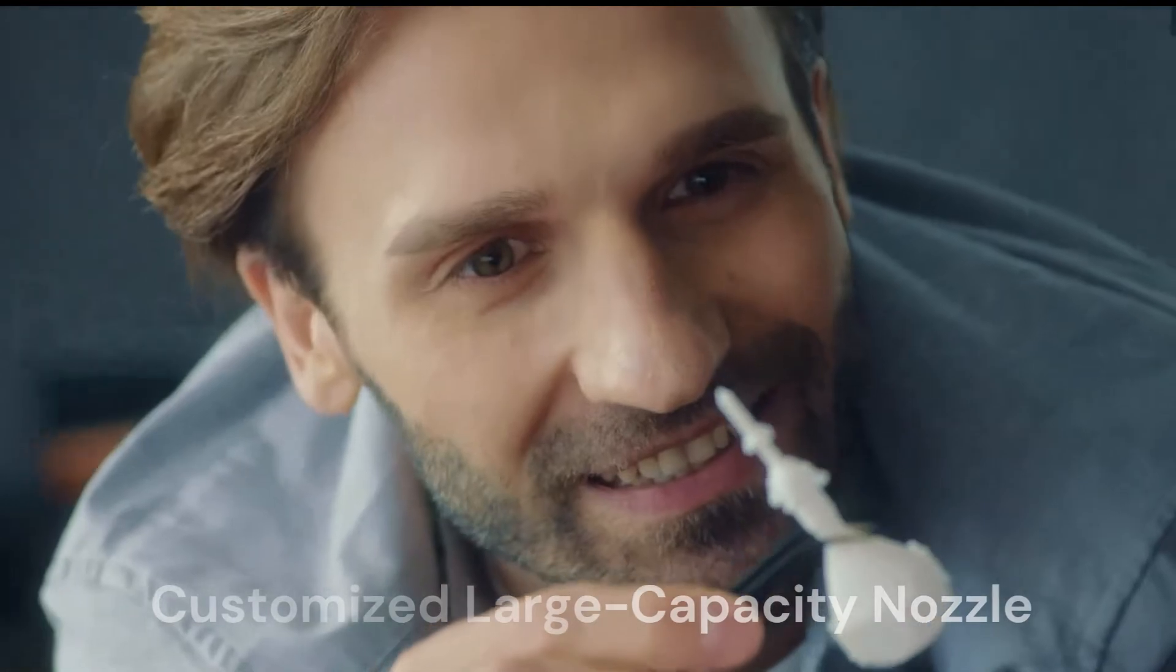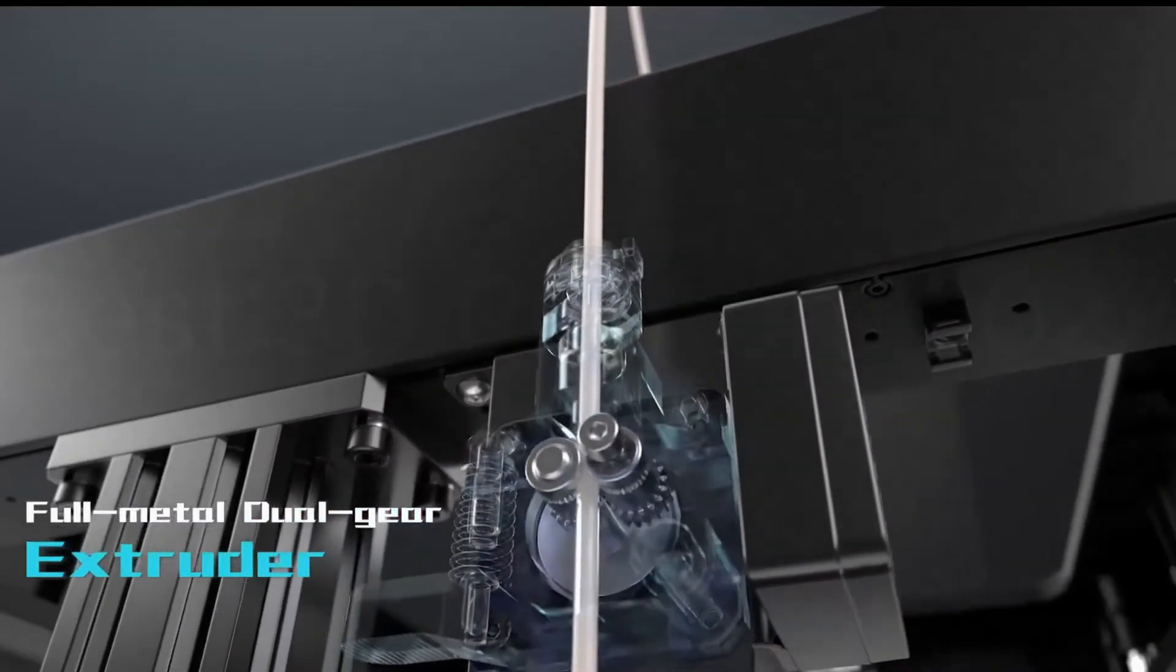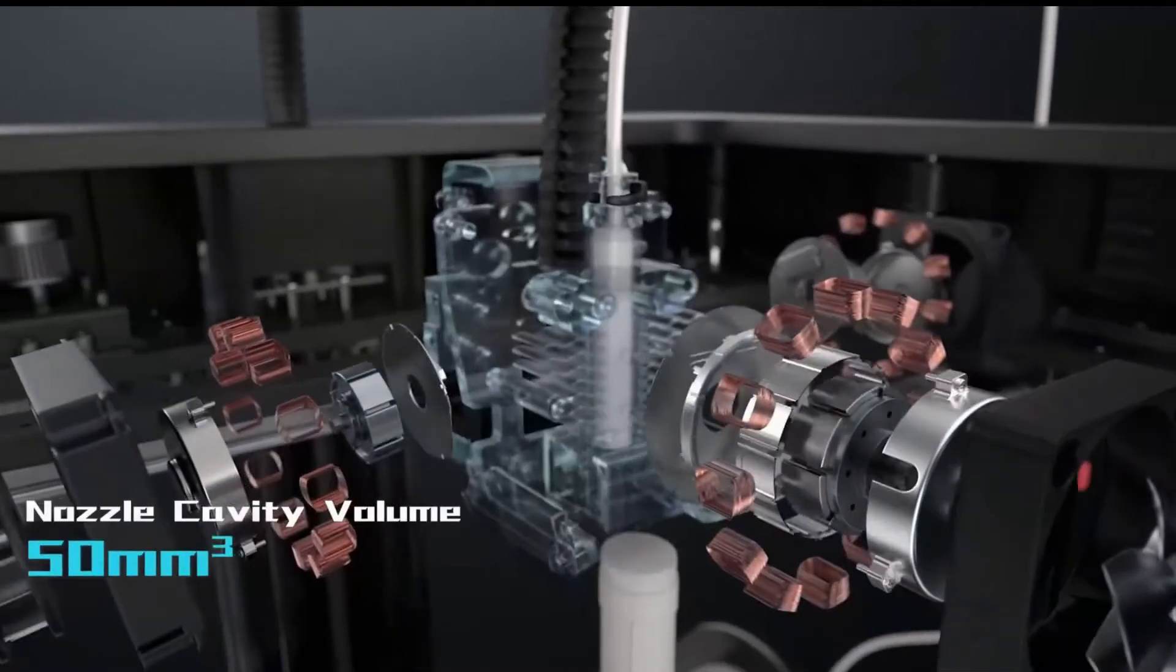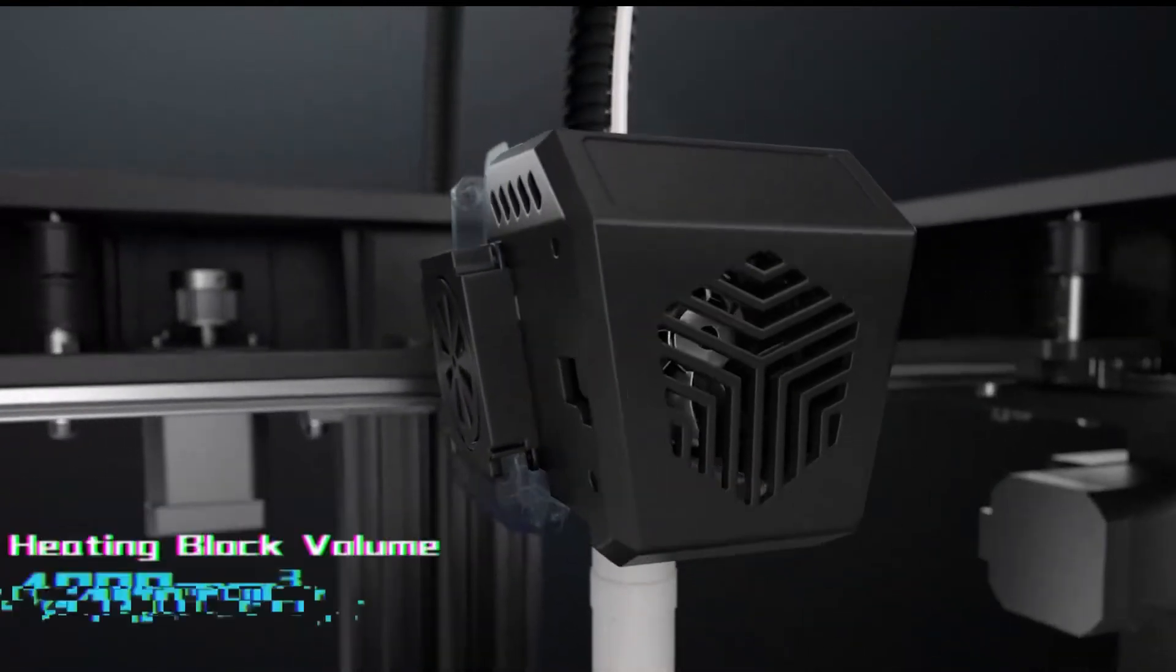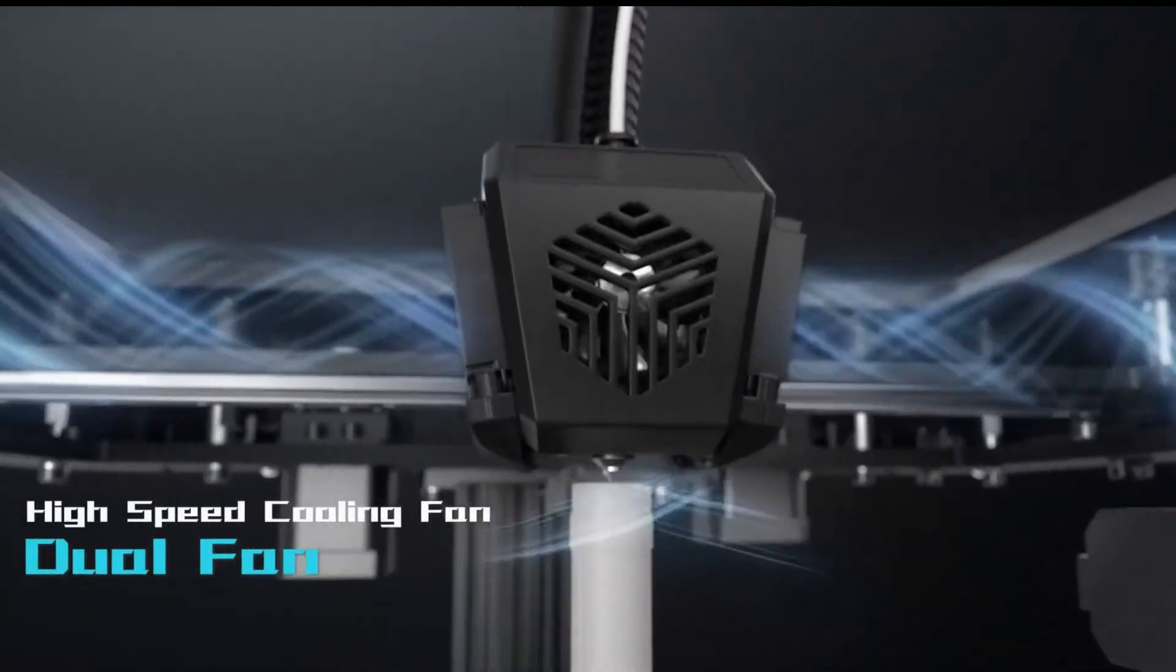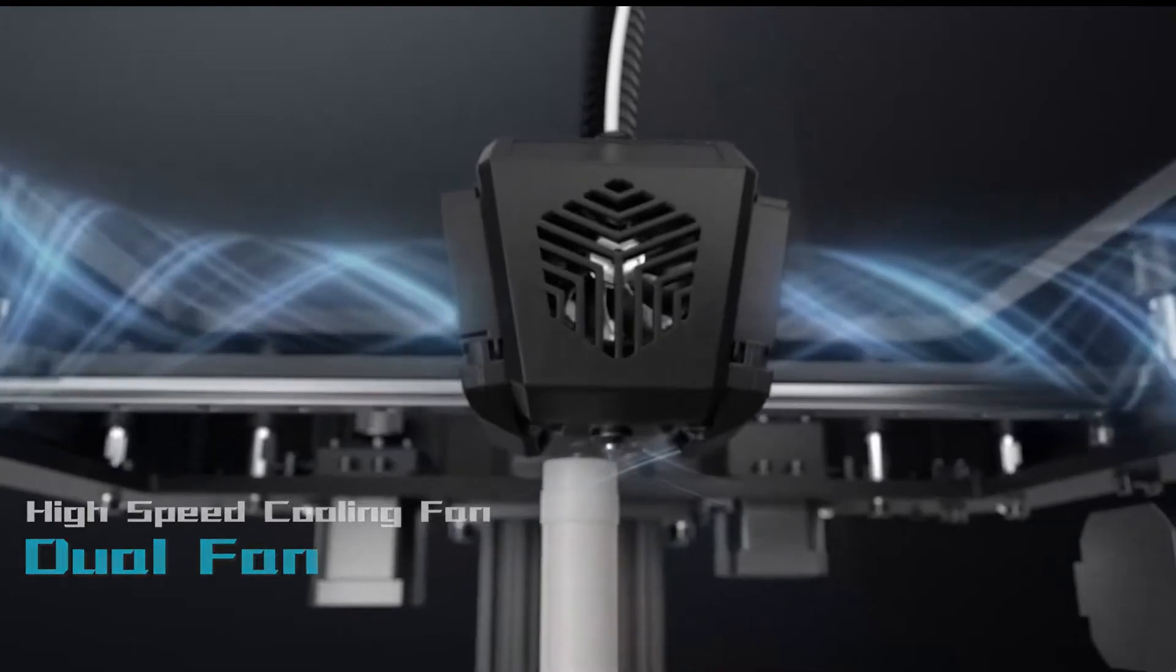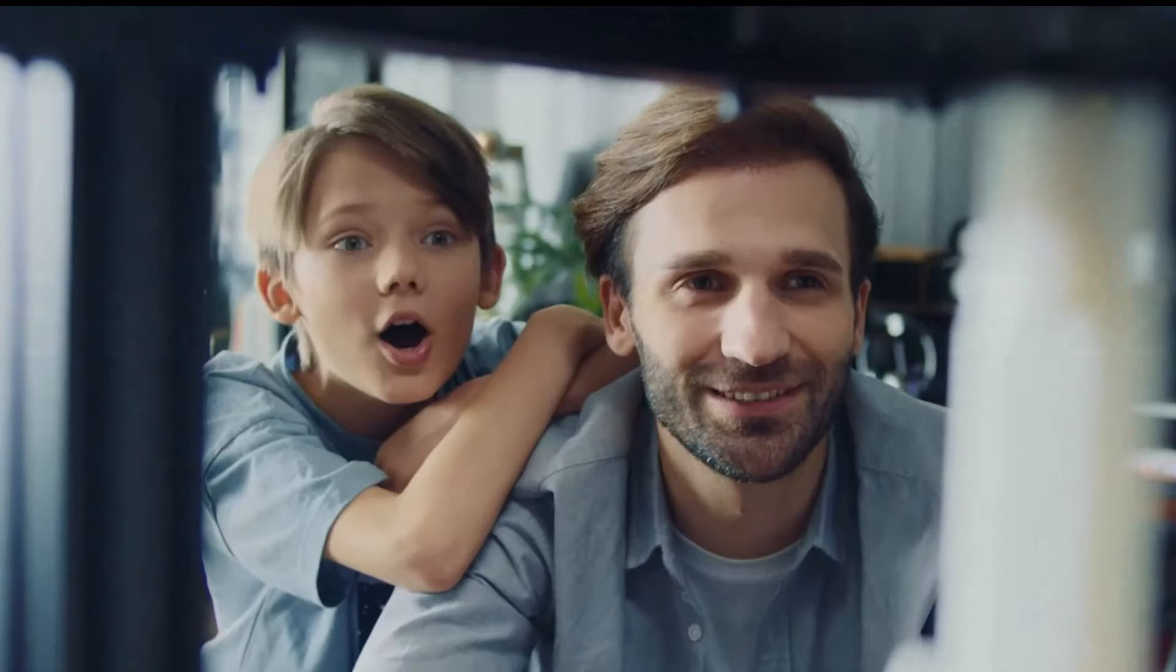Customized large-capacity nozzle, the Creality Ender 7 3D printer has a customized large-capacity nozzle, the volume of the melting chamber is increased to 50mm³, and the volume of the heating block is increased to 4000mm³. High-speed dual cooling fan, the extruder cooling fan makes the feeding more stable. The 10,000R/min high-speed dual cooling fans are designed in the butterfly wing air duct, which can maintain continuous cooling even under high temperature.